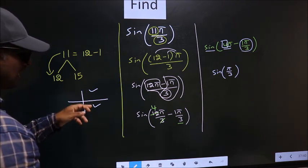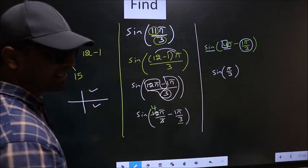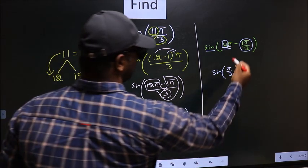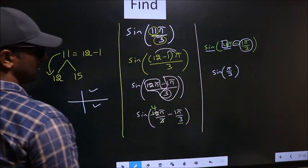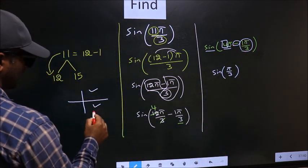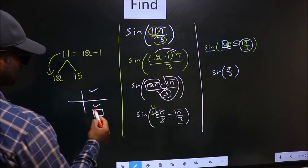To decide in which angle does it lie, we should look at this symbol. Here we have negative symbol, that means the angle will lie in the 4th quadrant.